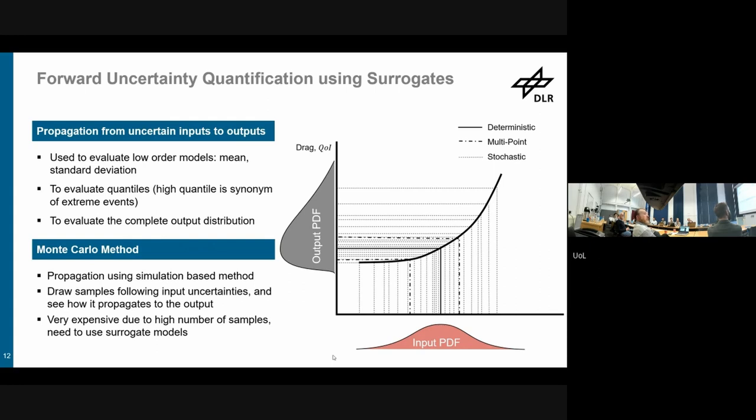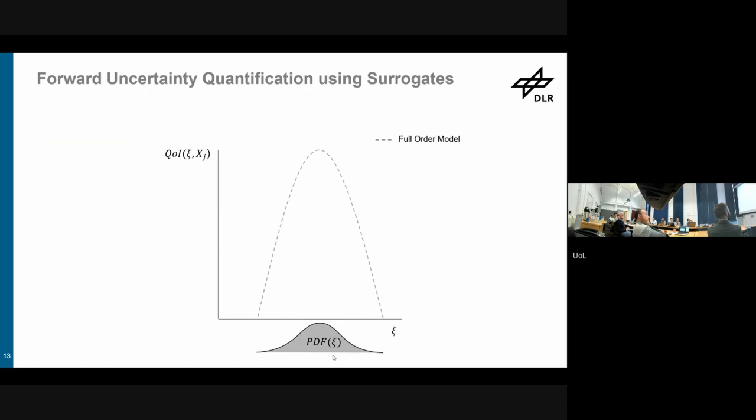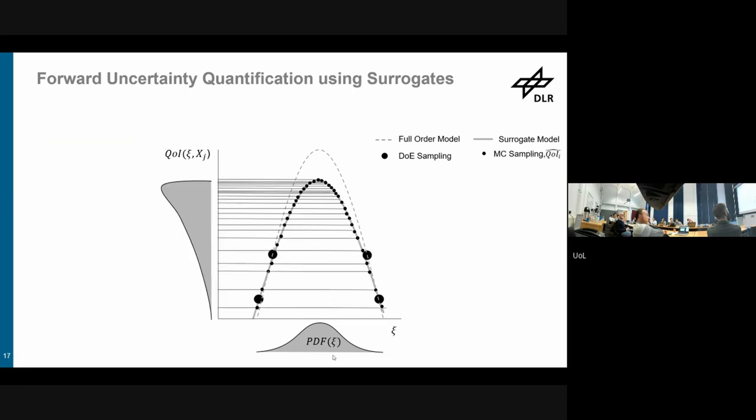Then in an uncertainty fashion, you define some input probability density function, you evaluate the model at all these points, you get some output PDF. And the idea is now let's replace the deterministic point here, or let's replace the model here with the surrogate model. So this is your full order model, the PDF as we've seen on the slide before. You do a few DOE points, you put a model next to it. You can see it does fit the data points. It's not that great, actually, nevertheless.